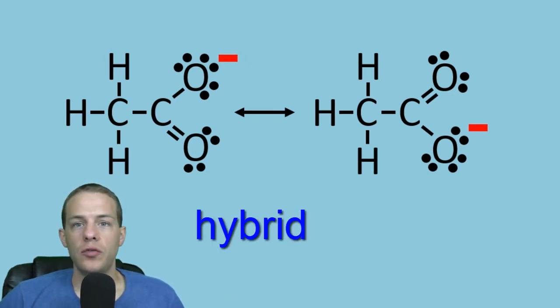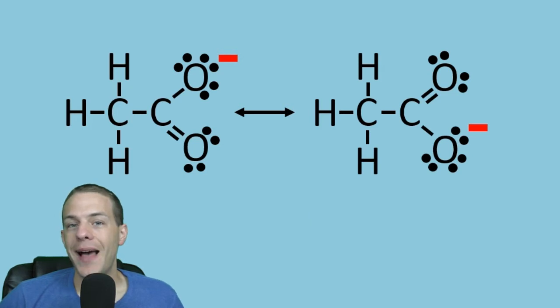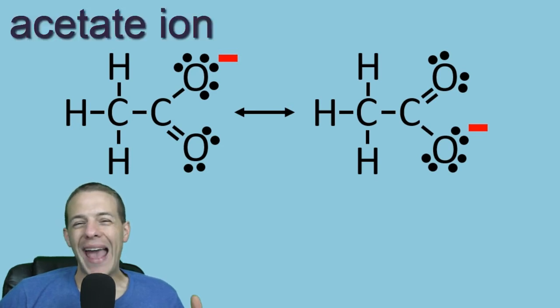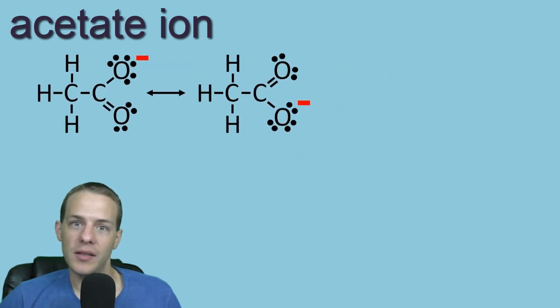So just to go back to the example that I showed you in the last video, my first video on resonance forms, we looked at the two resonance structures of the acetate ion. And what I said in that video was, or essentially what I said was, neither one of those resonance forms tells the whole story. The true structure is actually somewhere in the middle.